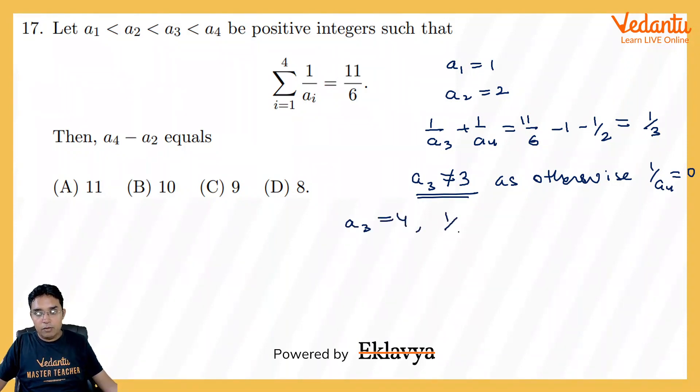If a3 is 4, 1 upon a4 will be equal to 1 upon 3 minus 1 upon 4, it is 1 upon 12. So I think we are getting a4 to 12, and all these values are integer.